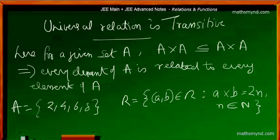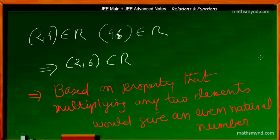That relation can be applied across all the elements, which means we are dealing with a transitive property — in the sense that (2,4) is an element of the relation, (4,6) is also an element of the relation, which means (2,6) is also part of the relation. The key point is that we are using the property of multiplying two elements to get an even natural number.